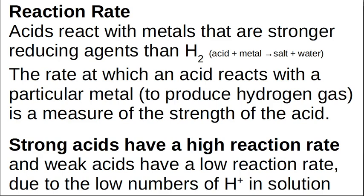The last measure we'll look at is reaction rate. An acid plus a metal gives you a salt and hydrogen gas. If the acid reacts with a metal that is a stronger reducing agent than hydrogen, it will produce a salt and hydrogen gas. The rate at which the acid reacts with a metal to produce hydrogen gas is a measure of the strength of the acid — a strong acid will have a higher reaction rate with hydrogen gas bubbling off very rapidly.